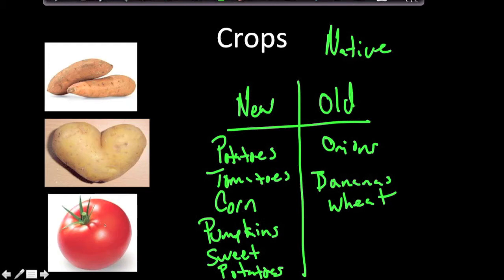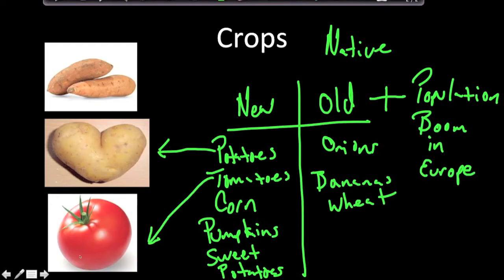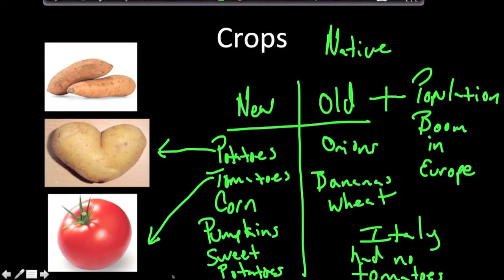The biggest impact was the potato. Potatoes went from the New World to the Old World, and you could grow a ton of potatoes on a very small area of land. This allowed calorie intake in the Old World to increase, which meant a population increase. Following the Columbian Exchange, largely due to the potato, there was a population boom in Europe — particularly Ireland. There weren't even any tomatoes in the Old World before 1492, so Italy had no lasagna, no spaghetti, no pizza.